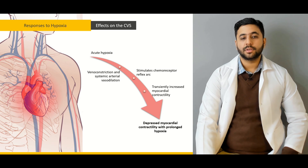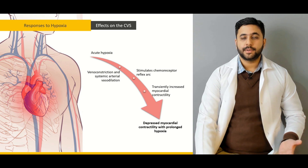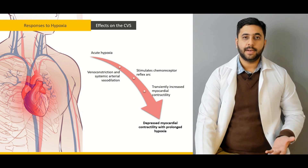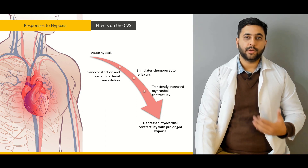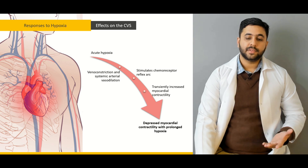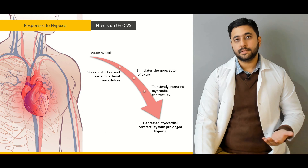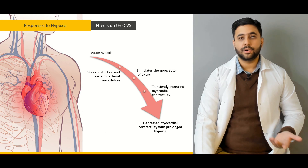The effects of hypoxia on the central cardiovascular system will be discussed. How does the chemoreceptor reflex arc work? How does it help us in adequately perfusing the body, and what happens if the hypoxia is prolonged and how it can depress myocardial contractility in the long run?